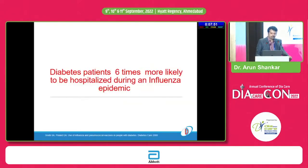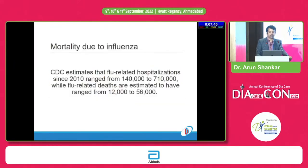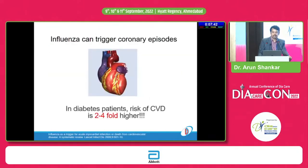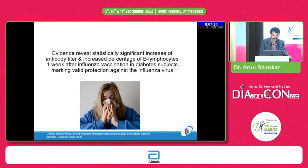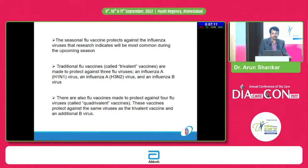Moving to influenza: diabetes subjects are 6 times more likely to be hospitalized during an influenza epidemic, and mortality is also high. Influenza can trigger coronary episodes in diabetes, with the risk of cardiovascular disease 2 to 4-fold higher. Subgroup analyses have shown influenza vaccination to be efficacious and cost-effective in reducing hospital admissions and associated complications. After one week of the influenza vaccine, there is an increase in antibody titer and increased percentage of B lymphocytes, protecting against influenza infection.